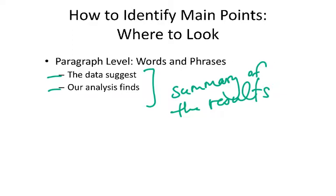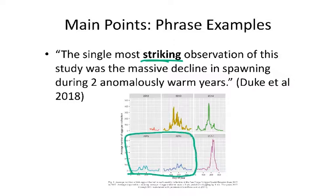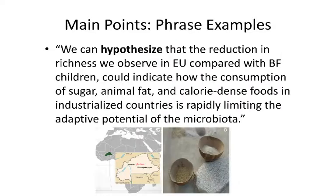Going back to the fish egg dataset for an example: in their discussion they say the most striking observation of the study was the big decline in spawning during two really warm years. This connects back to the figure showing large variation among years, with really low amounts of spawning in those two warmer years. So 'most striking' is a keyword that helps identify one of the main points of that paper.